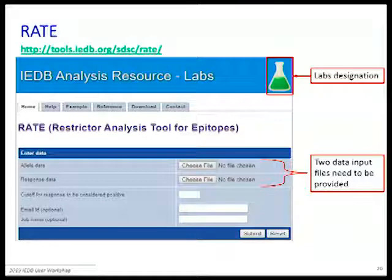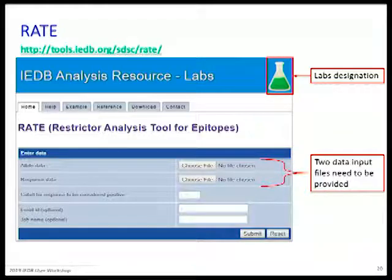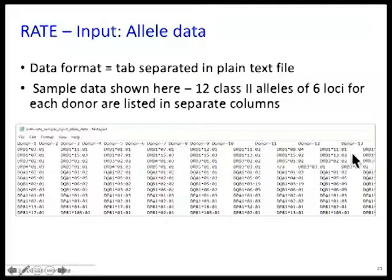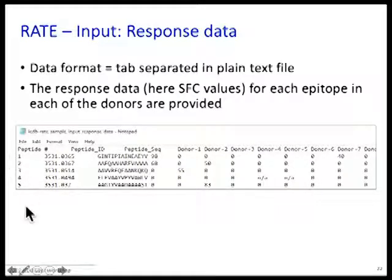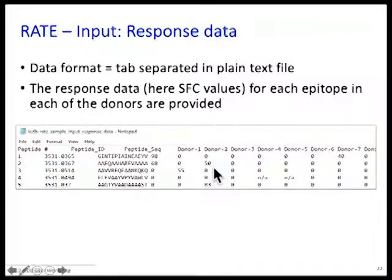In order for the tool to function, you need to tell it the HLA typing of each individual in your population, and tell it which individual responded to which peptide. So, the response data. Here is an example: 14 people, you have the HLA type of this particular set, and an imaginary set of five peptides that were tested. Sometimes data was not available. You see that peptide number one was recognized by donor number seven, peptide number two was recognized by donor two, and so forth.